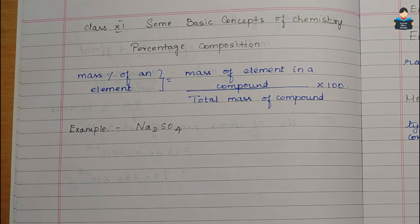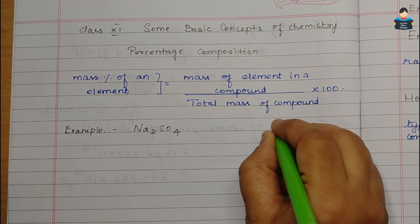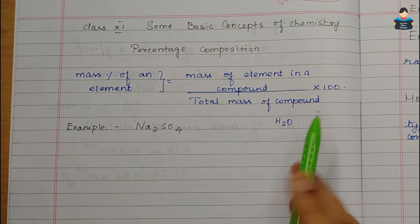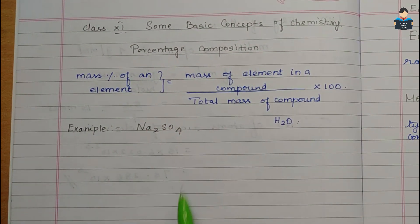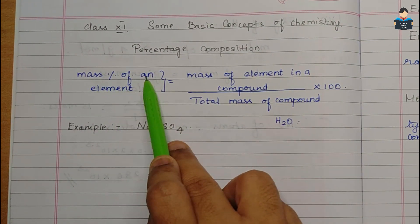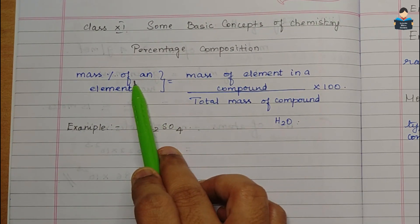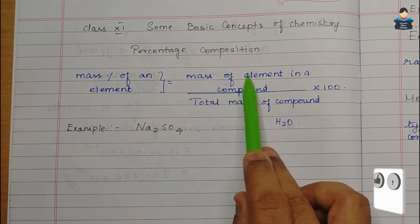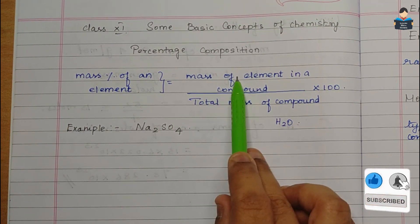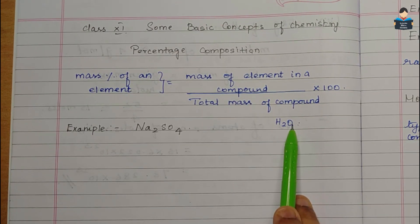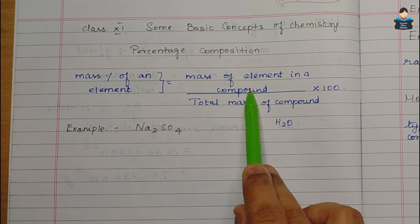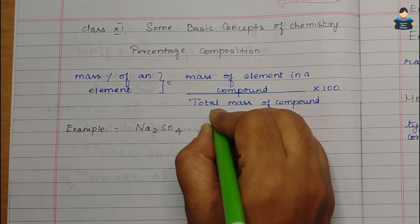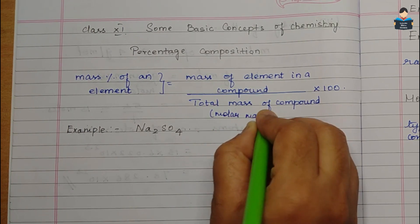For example, we have water. We find out the percentage of oxygen present in water using this formula. The mass percentage of an element in a compound is: mass of the element in the compound divided by the total mass of the compound, which is the molar mass.